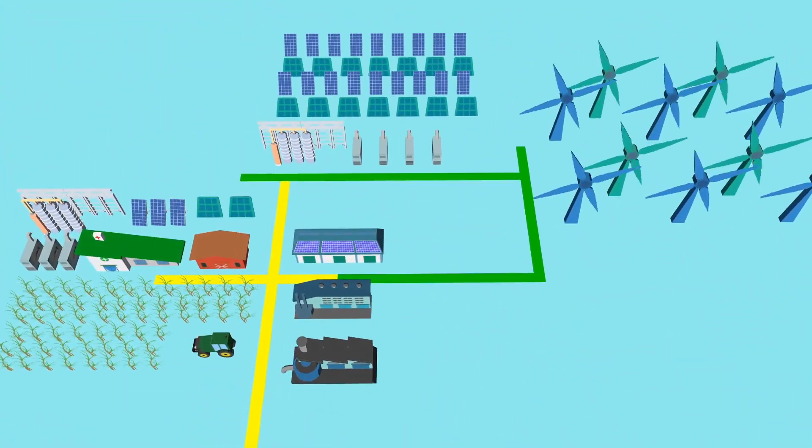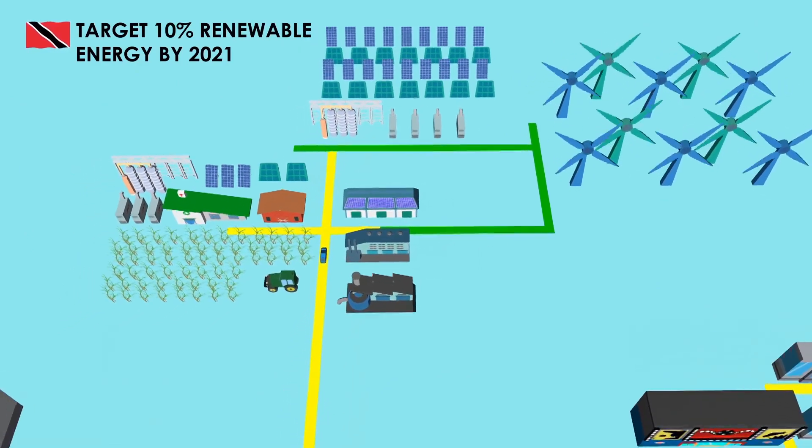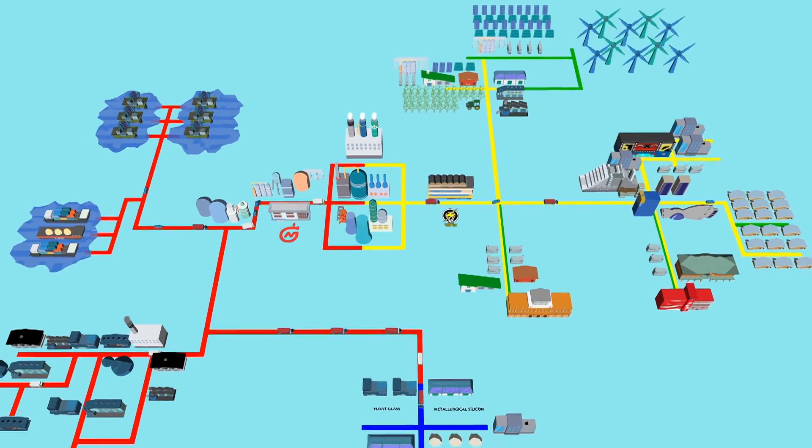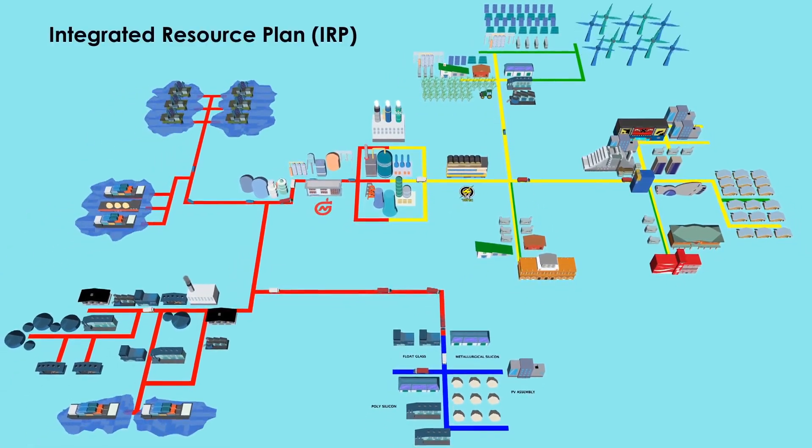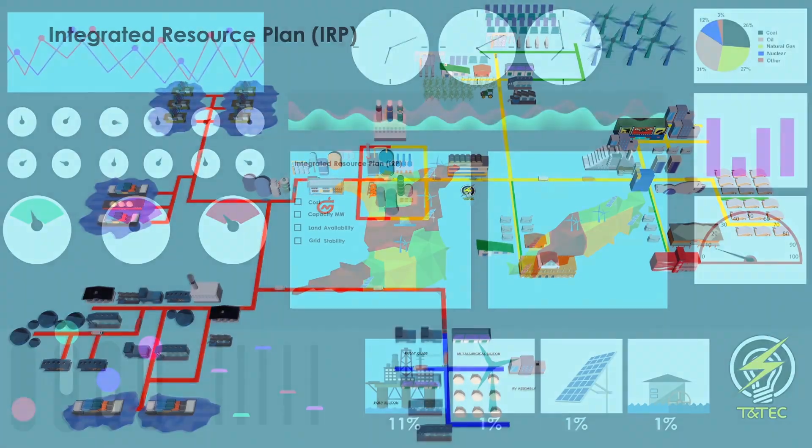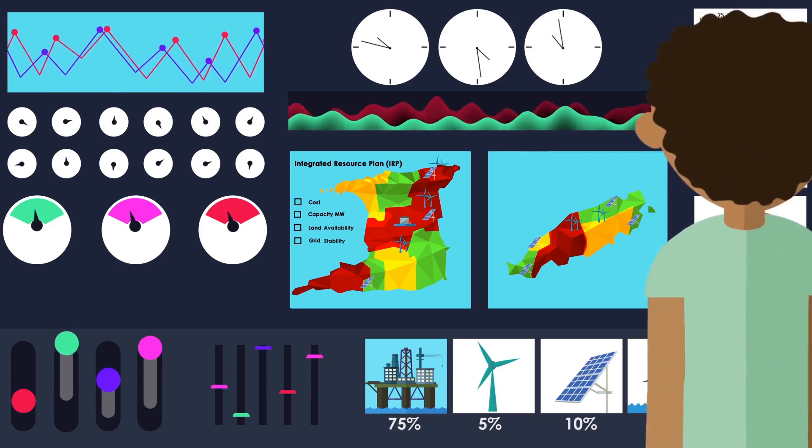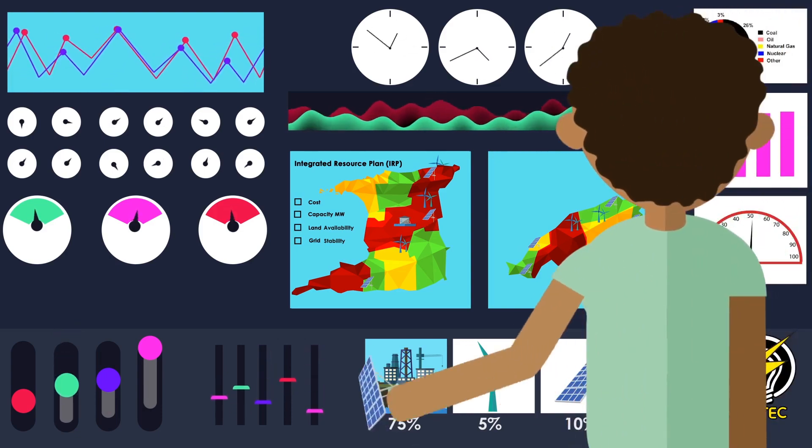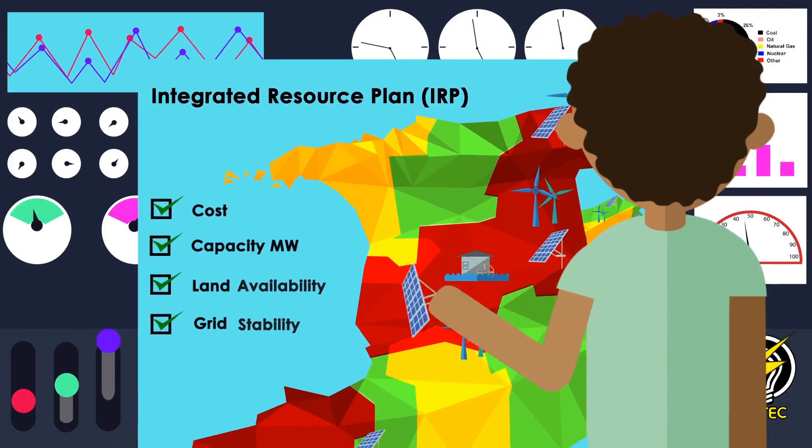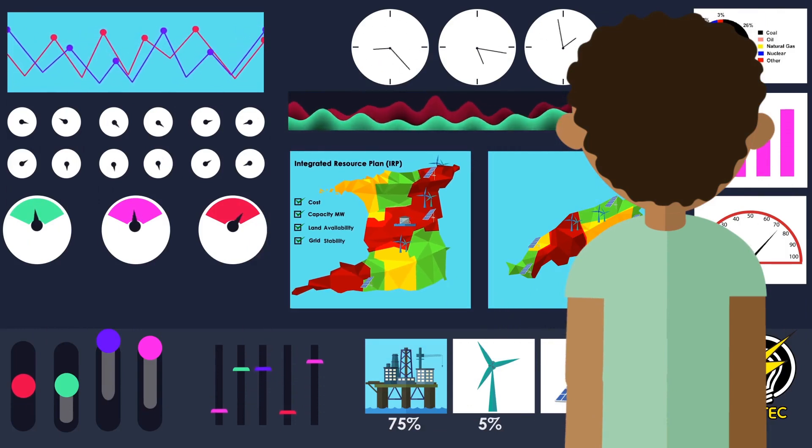T&T also has the target of 10% renewable energy by 2021. To make the smartest decisions for our power sector, a holistic approach known as an integrated resource plan is needed to strategically plan T&T's electricity network investments. This is a crucial process, which many other Caribbean islands have already embraced and undergone, and is a study which assesses the best mix of different electricity supply technologies and the optimal locations across the nation's grid to minimize transmission wastage, ensure grid stability and avoid blackouts.